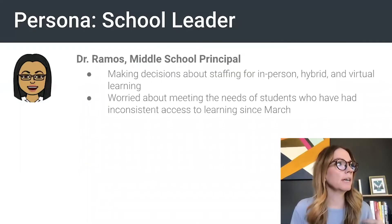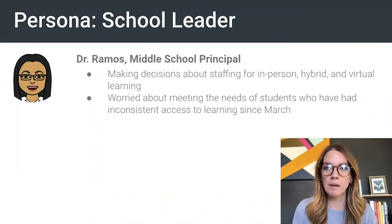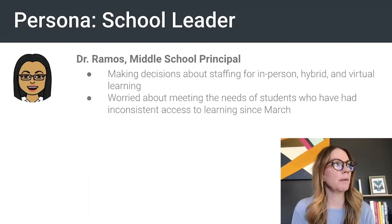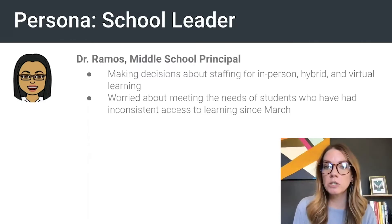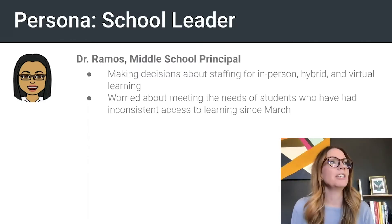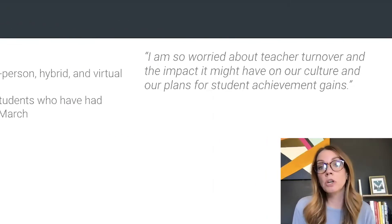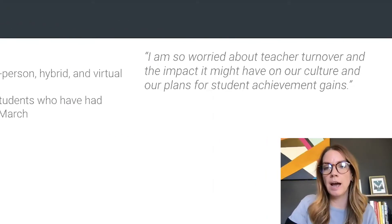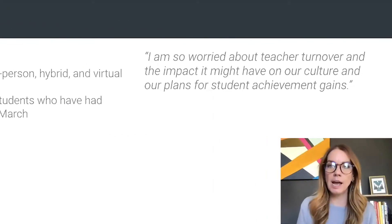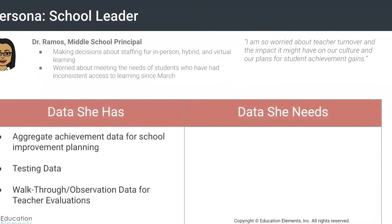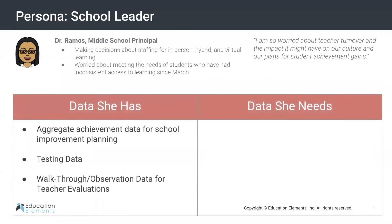The first persona is a principal. This is a principal who is having to make decisions about staffing — staffing for in-person school and for hybrid school — and she's worried about teacher turnover and the impact it's going to have on her culture. This is a hypothetical persona, but based on our experience, she's going to have access to aggregate achievement data that she typically uses for school improvement planning.